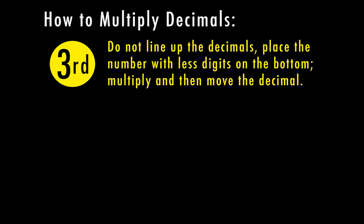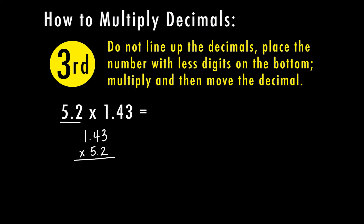For this third step — since we're not lining up the decimals, the easiest way is to place the number with fewer digits on the bottom, then multiply and move the decimal. So if I have 5 and 2 tenths times 1 and 43 hundredths, even though this one has more places after the decimal, 5 and 2 tenths has fewer digits. So I'm going to put that on the bottom, doing 1 and 43 hundredths times 5 and 2 tenths.